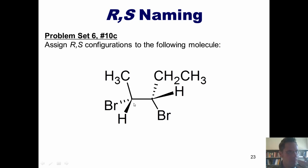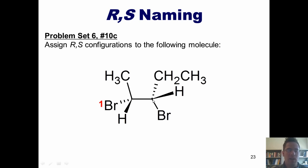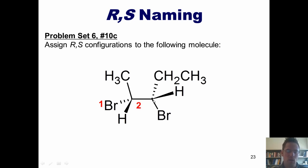Let's begin by analyzing the stereocenter at left. This carbon is bonded to a bromine, a carbon, a hydrogen, and a carbon. The bromine wins. Now between the carbon up here and the carbon to the right, they tie, so I have to go out until I break the tie. The carbon up here is bonded to a hydrogen, while the carbon down here, going in the direction that gives the highest atomic number, is bonded to a bromine. Thus this appendage to the right has priority group number two, and this methyl up here is three.